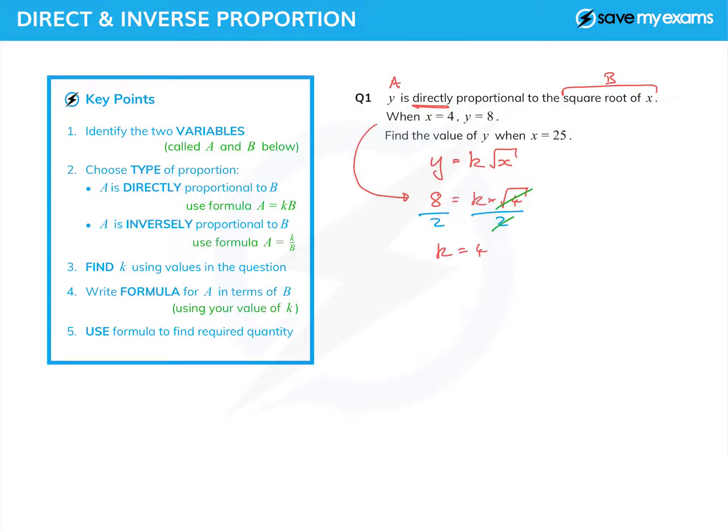Because 8 over 2 is 4, we can say y equals 4 root x. They may ask for that in one part of the question or they may not, but I'm now going to use that to find the value of y. So x equals 25 gives me y equals 4 times root 25. Root 25 is 5, so y equals 20.